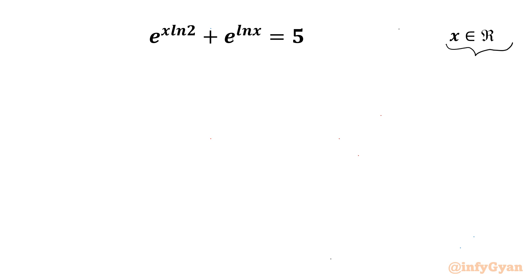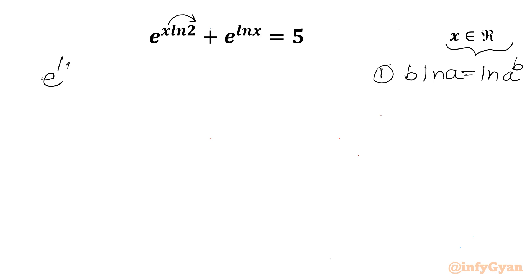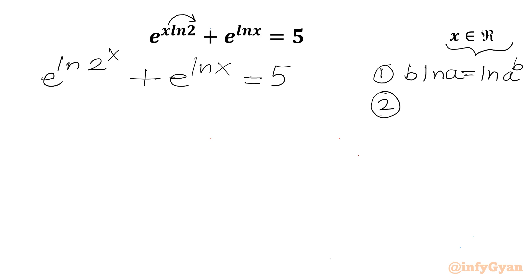Let's get started by writing one logarithmic property first: b·ln(a) is always equal to ln(a^b). We will also use the exponent property that e raised to the power ln x is always equal to x.